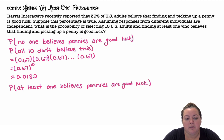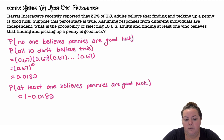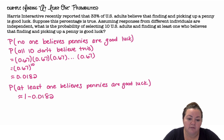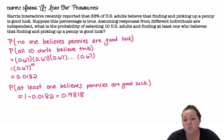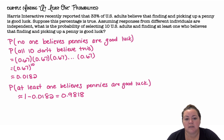The probability that at least one person believes that pennies are good luck is one minus the probability that all 10 of them do not believe it, which gives us 98.18%. 'At least one' means it could be just one, two, three, or all 10 — so there are a lot of different possibilities.